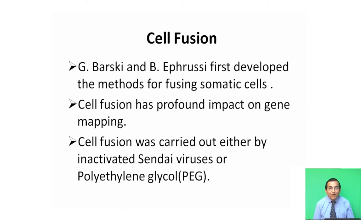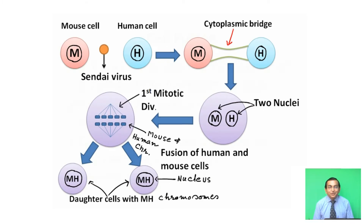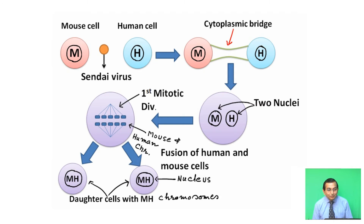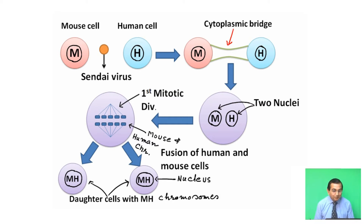How does cell fusion occur? What is the mechanism of cell fusion? Here in this diagram, we are showing the fusion of two types of cells: mouse cell and human cell.